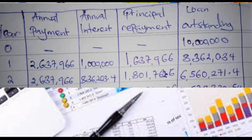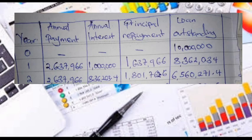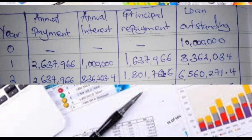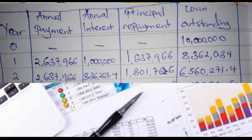For year two, the annual payment is still the annuity — 2,637,966 shillings. The annual interest is calculated as 10 percent of the loan outstanding for year one. The principal repayment is annual payment minus annual interest, and the loan outstanding for year two is the loan outstanding for year one minus the principal repayment for year two.